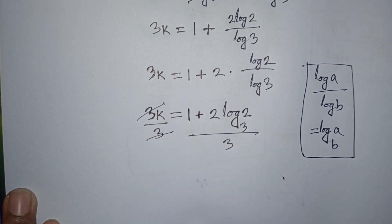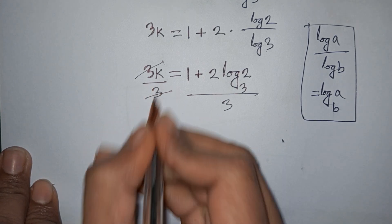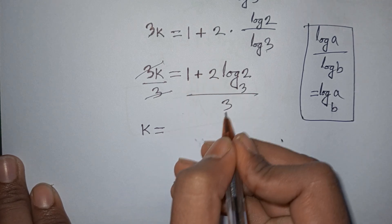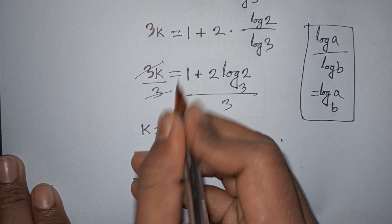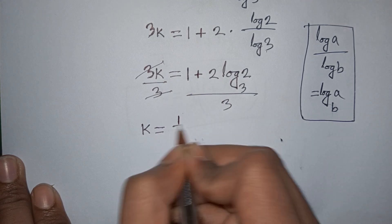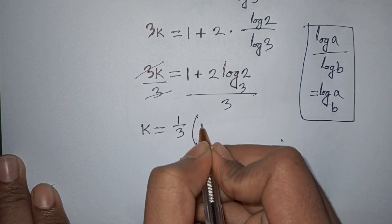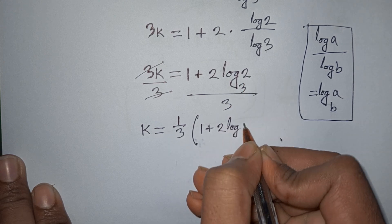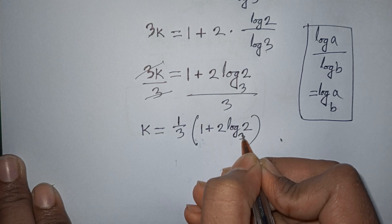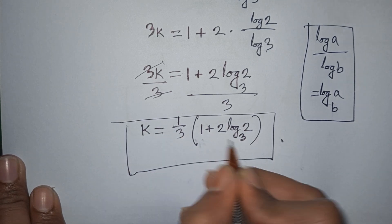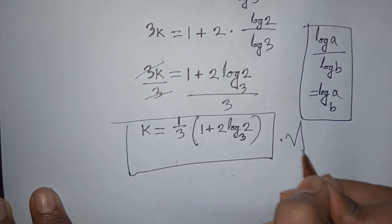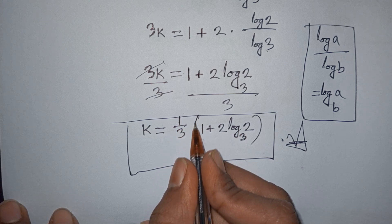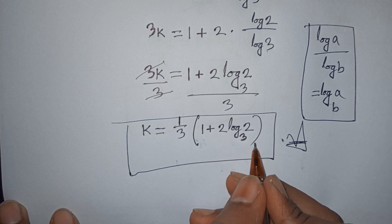Dividing by 3, the 3s cancel and we get k equals (1 plus 2·log base 3 of 2) divided by 3. So the final answer is k = (1 + 2·log₃2) / 3.